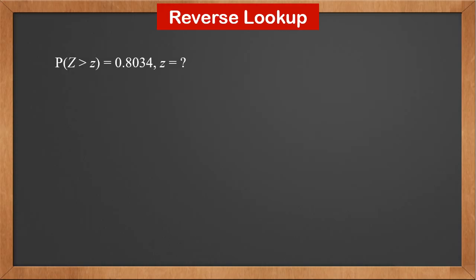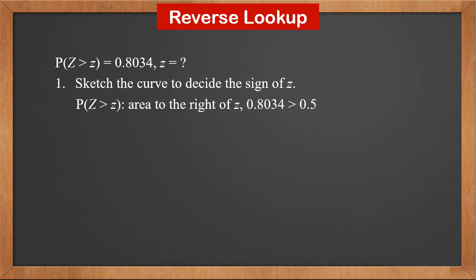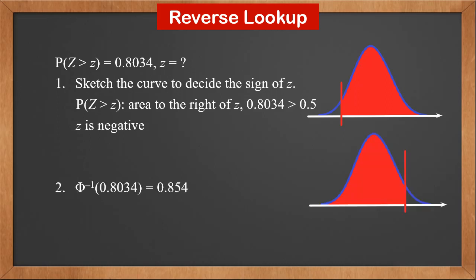If P(Z > z) = 0.8034, what is z? First, sketch the curve to decide the sign of z. It's P(Z > z), so it's the area to the right of z. 0.8034 is greater than 0.5, so the sketch is like this. Therefore, z is negative. We already know inverse phi(0.8034) = 0.854, and its graph is like this. Therefore, by symmetry, z is minus 0.854.